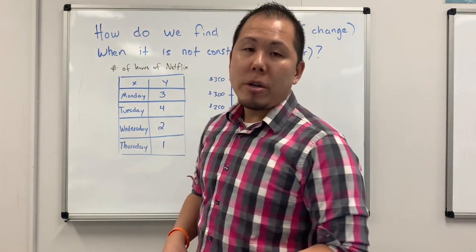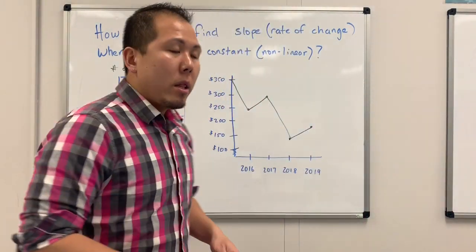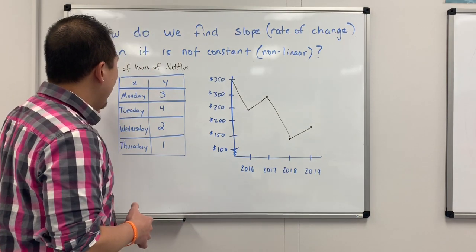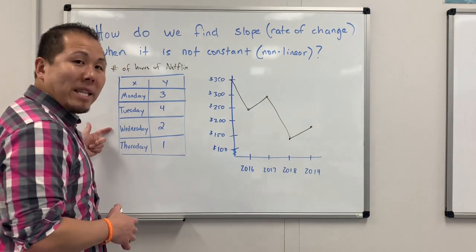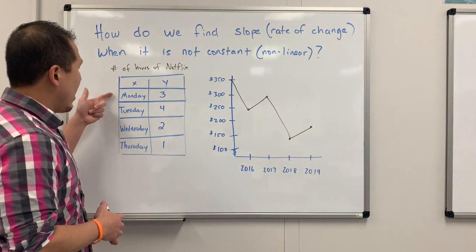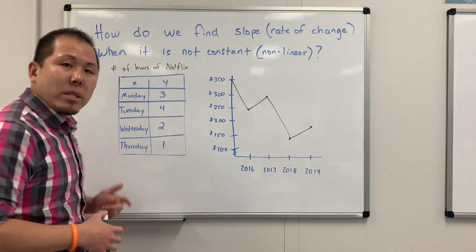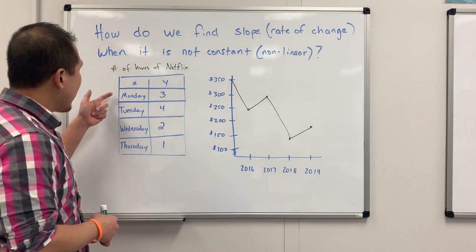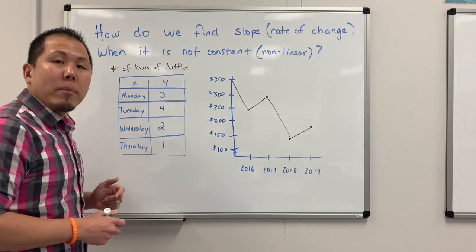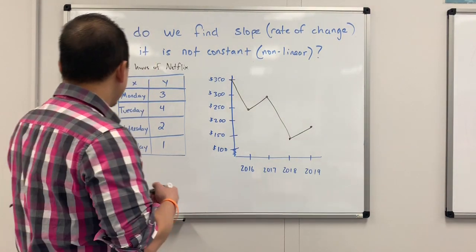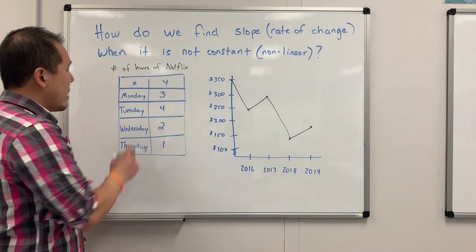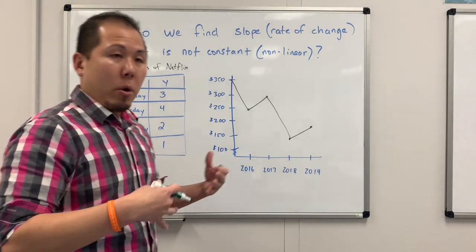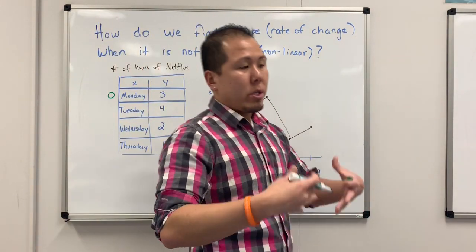So let's look at our table here. Let's say we wanted to find the rate of change from Monday to Wednesday. There's really no data points here — no numbers. So what we can do is take our days and turn them into specific numbers. On Monday, that's day zero. We start off — it's like our initial value, we start at zero.